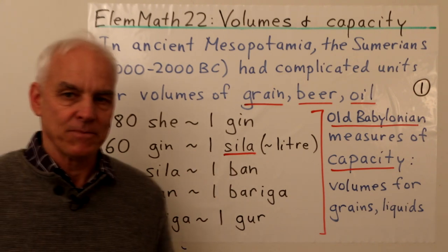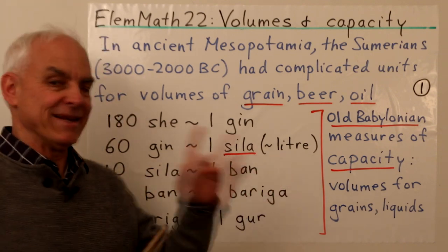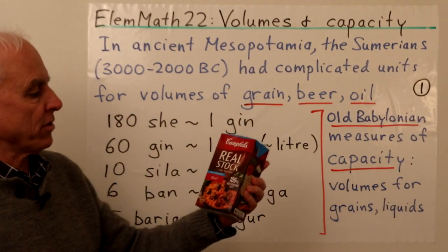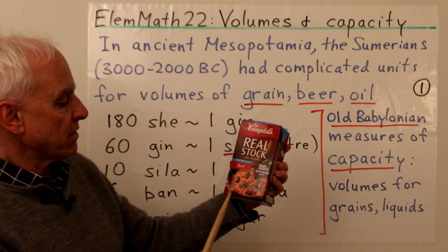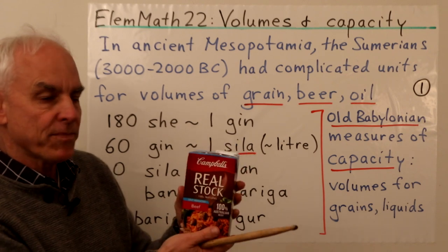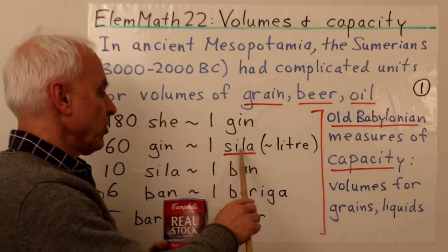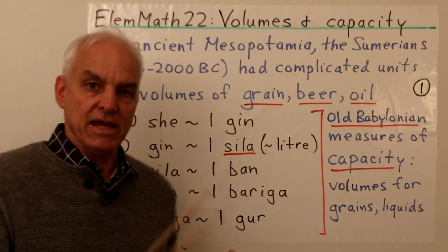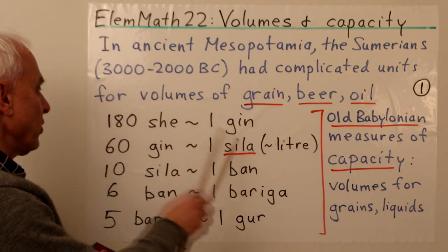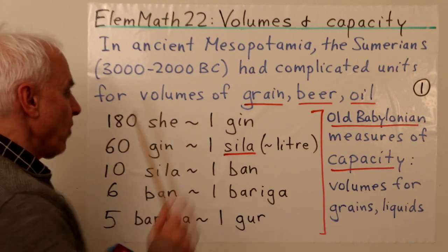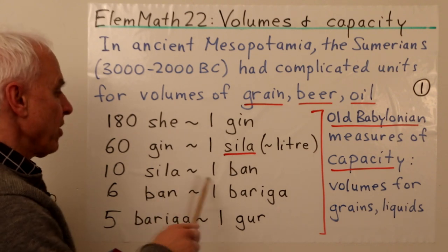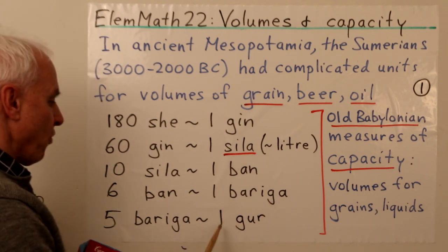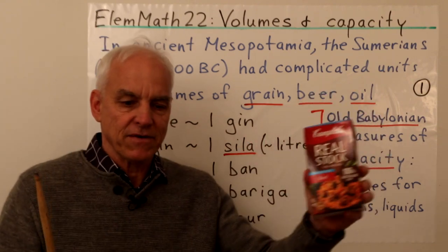The main unit was the Scylla, which is very close to a modern liter. Here's an example of a liter — this is some beef stock, one liter — roughly comparable to what the Old Babylonians called a Scylla. The Scylla itself was composed of 60 gin, and one gin was composed of 180 shea. In terms of Scyllas, ten formed one ban, six ban formed one bariga, and five bariga formed one gore.